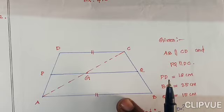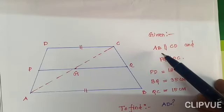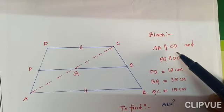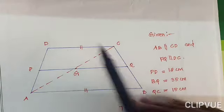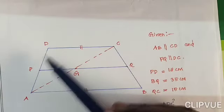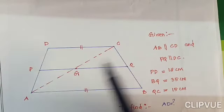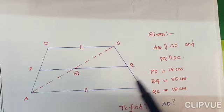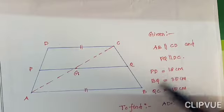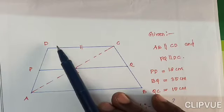Look at the diagram. It is a trapezium ABCD. AB is parallel to CD is given. You know the property of a trapezium — two parallel and two non-parallel straight lines. The straight line AP is parallel to DC, and BC and AD are the non-parallel straight lines. The two points P and Q are on the sides AD and BC. If you join them, we can get a straight line.